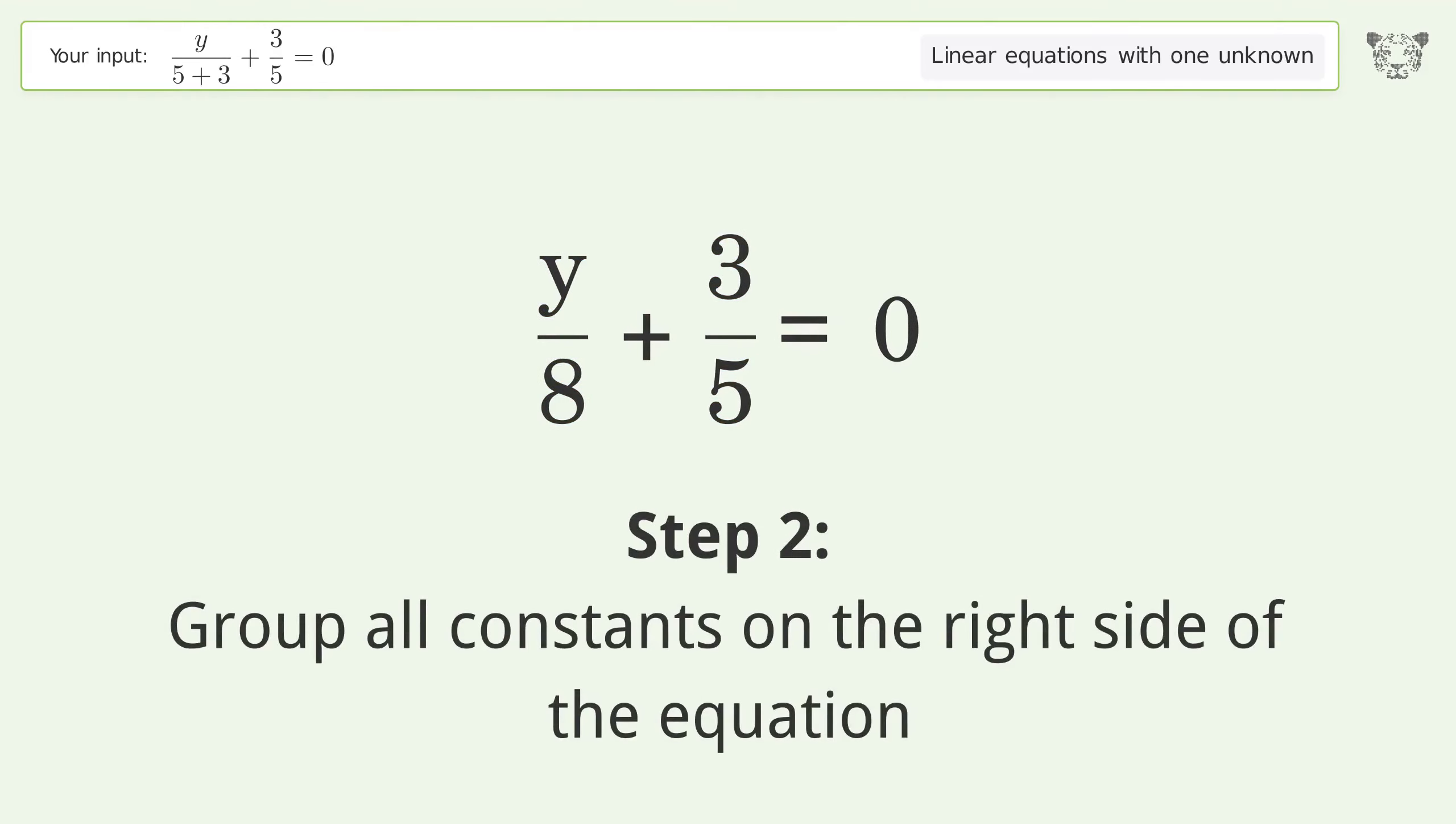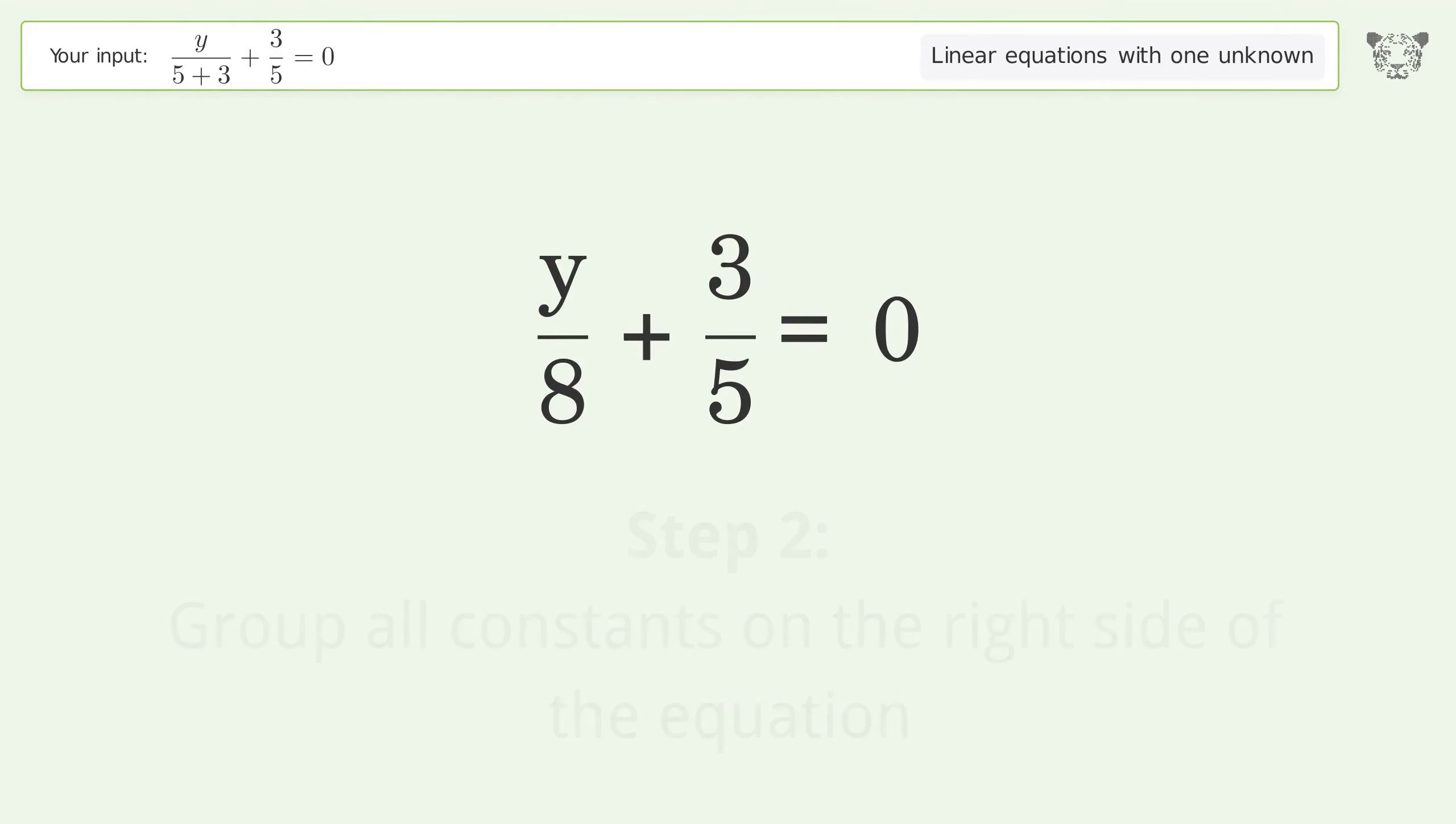Group all constants on the right side of the equation. Subtract 3 over 5 from both sides.